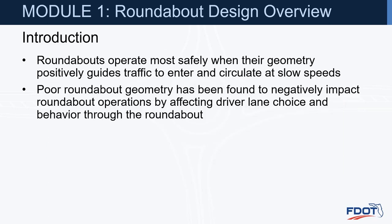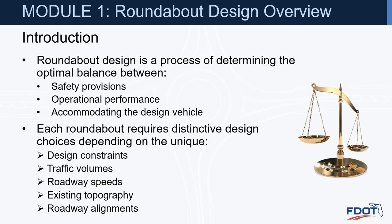Roundabouts operate most safely when their geometry positively guides traffic to enter and circulate at slow speeds. Poor roundabout geometry has been found to negatively impact roundabout operations by affecting driver lane choice and behavior through the roundabout. Roundabout design is a process of determining the optimal balance between safety provisions, operational performance, and accommodating the design vehicle.